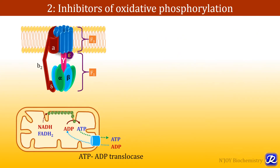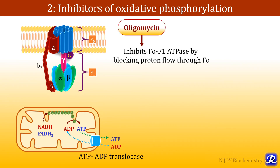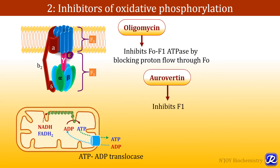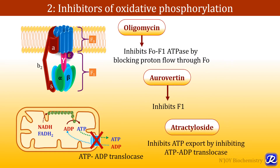Inhibitors of oxidative phosphorylation include oligomycin. Oligomycin inhibits the FO-F1 ATPase by blocking proton flow through the FO complex. The 'O' in FO stands for oligomycin because it is sensitive to and inhibited by oligomycin. Aurovertin inhibits F1.